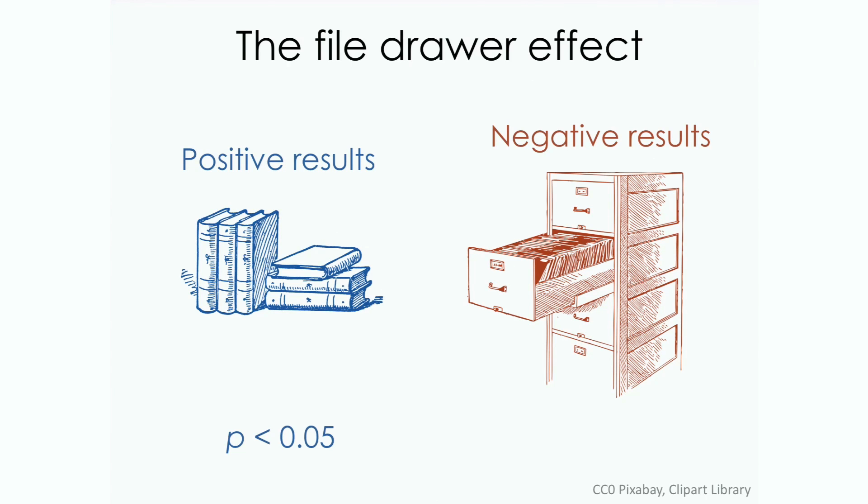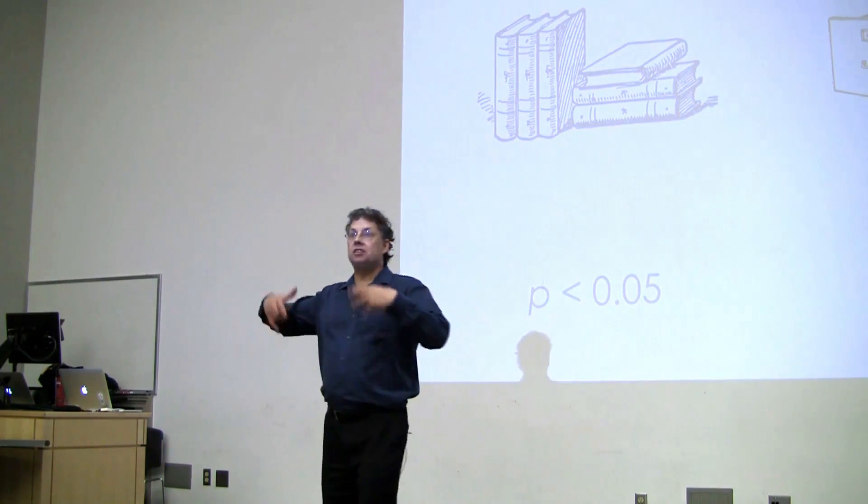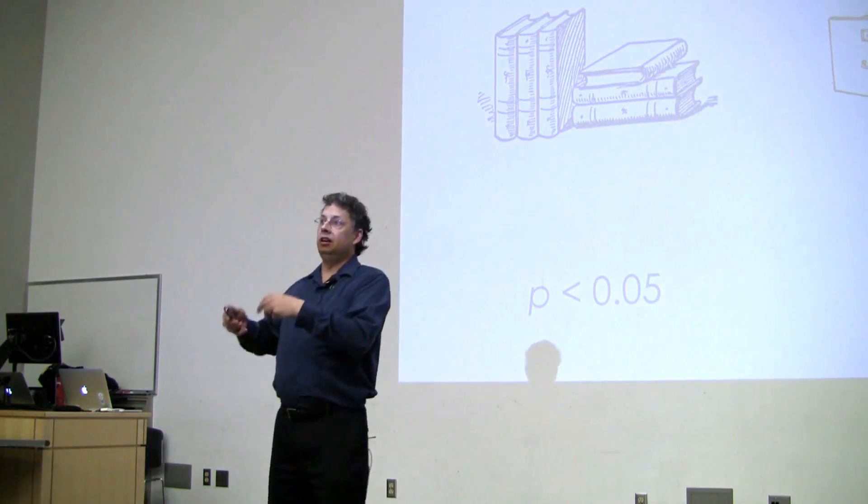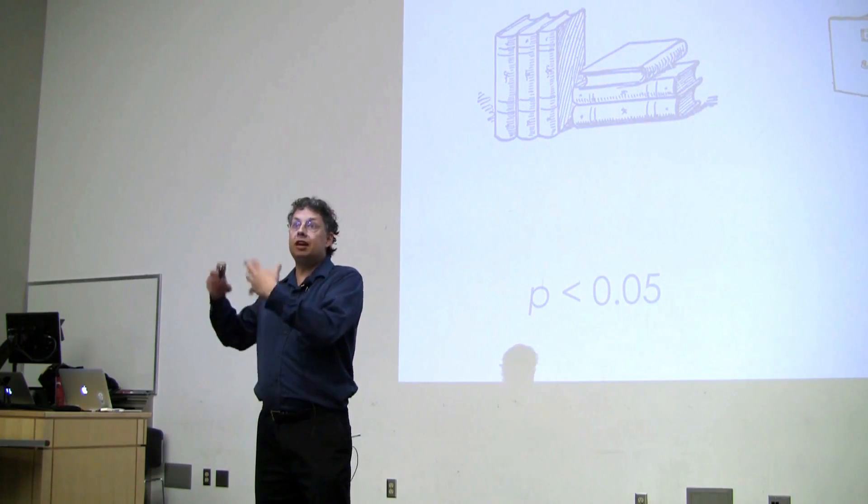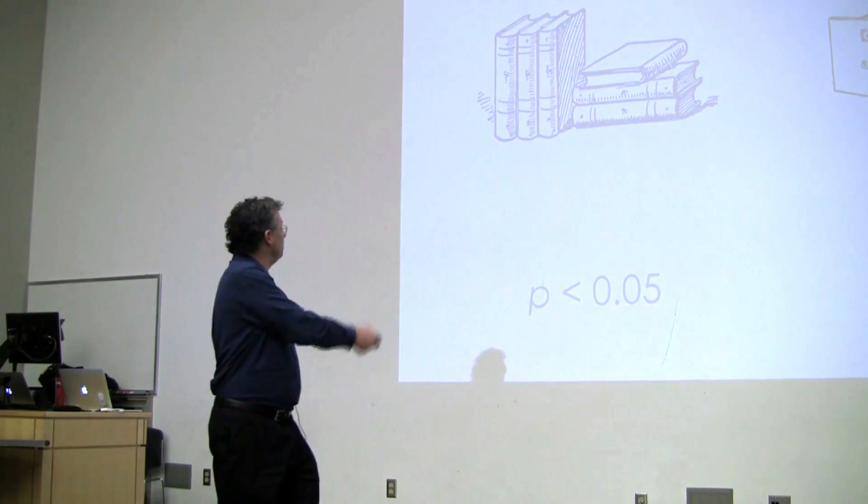So if we get a statistically significant result, p is less than 0.05, this kind of arbitrary cutoff that we use, then I publish it. P is greater than 0.05, I set it aside and move on to my next thing. And this creates a really big problem because it highly distorts the representation of the studies that have been done in the literature. There's only a certain class, namely these, that are shown in the literature.